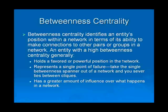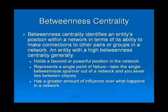Betweenness centrality identifies an entity's position within a network in terms of that entity's ability to make connections to other pairs or groups in a network. If an entity has a high betweenness value, it generally holds a favored or powerful position within the network and also represents a single point of failure. If you take the single betweenness entity out of a network, you sever ties between groups or cliques of entities. Betweenness centrality also identifies a greater amount of influence over what happens in a network.